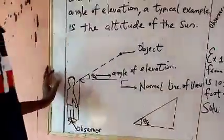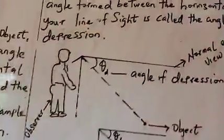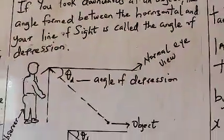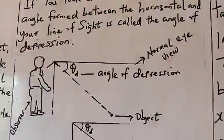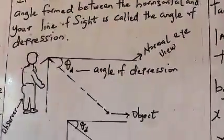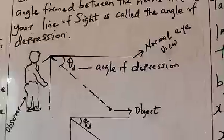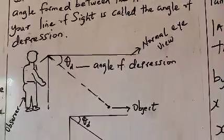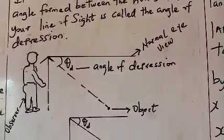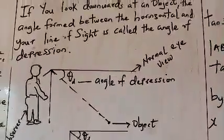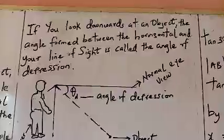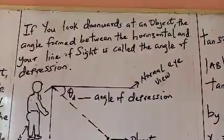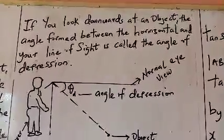Moving to the next slide — if you look downwards at an object, the angle formed between the horizontal and your line of sight is called the angle of depression.